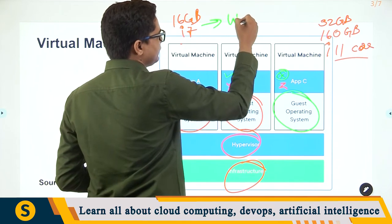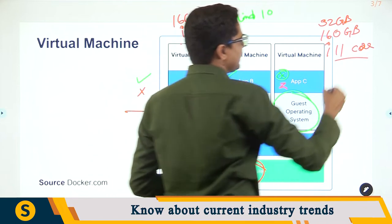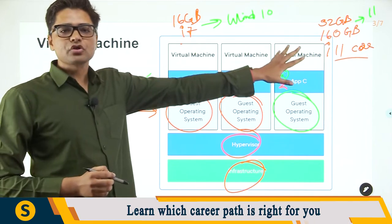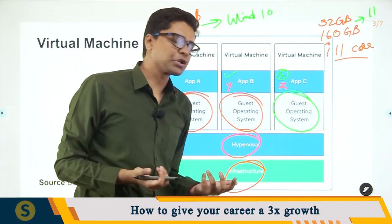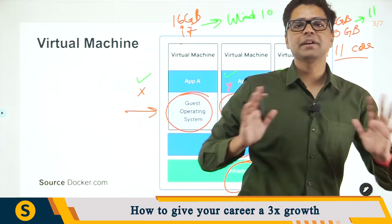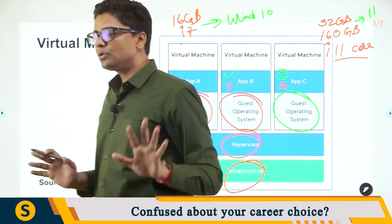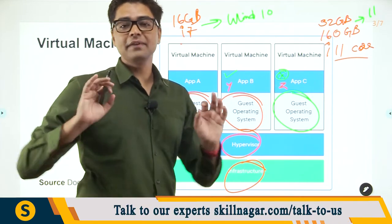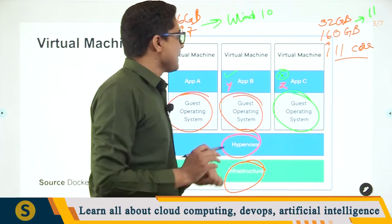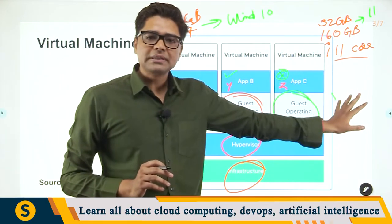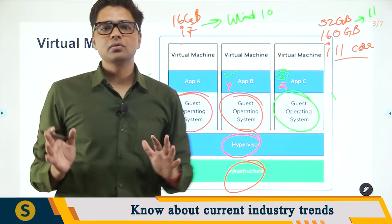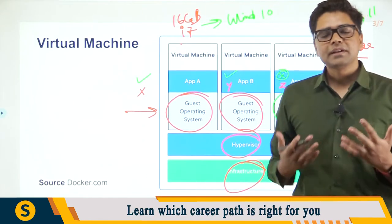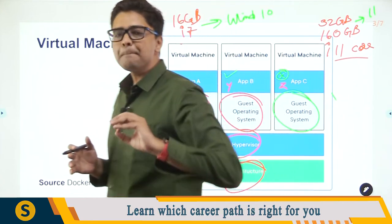The configuration problem is this: your local machine may have Windows 10, while the production server has Windows 11. You're developing software with one configuration on your machine, but the production server has a different configuration. This leads to the very popular problem known as: 'It works on my machine — I don't know why it's not working on yours.' Your configuration differs from the production machine's configuration, making software builds and management difficult or almost impossible.